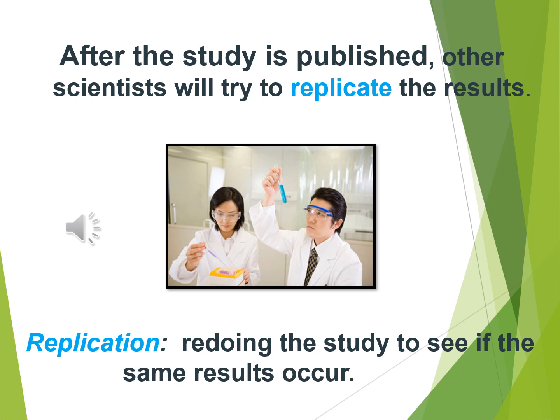We don't say a study 'proved' something in psychology. We might say the study provided evidence for a particular hypothesis, but not 'proof.' One study alone is a good start. After a good study is published, other scientists try to redo it to see if they get the same results — because sometimes things are just flukes. This is called replication: a process in which we redo an experiment to see if the same results occur. Replication is done in all the sciences.